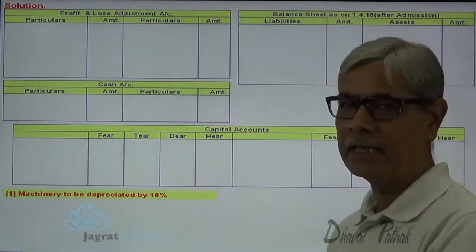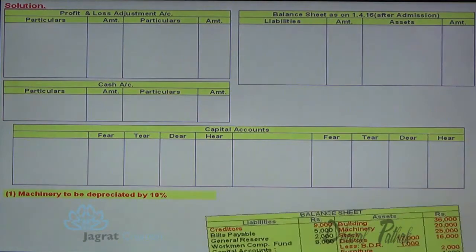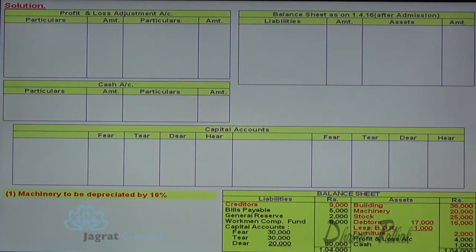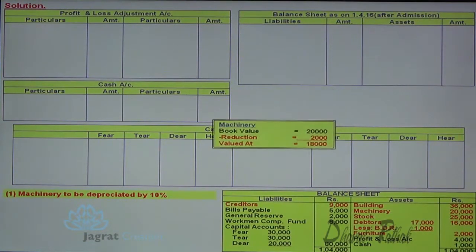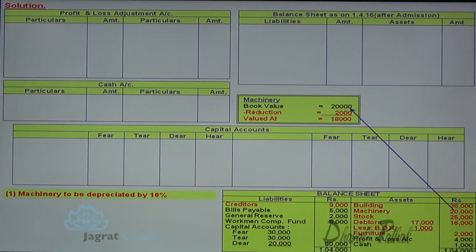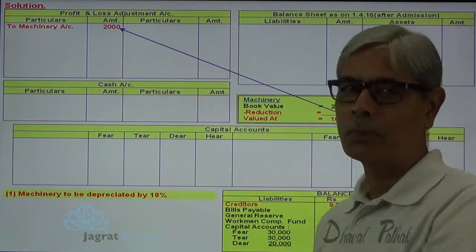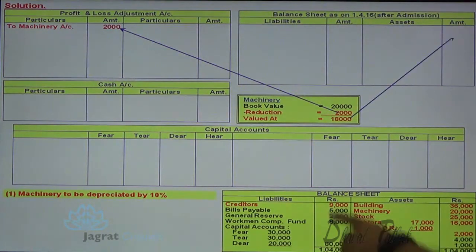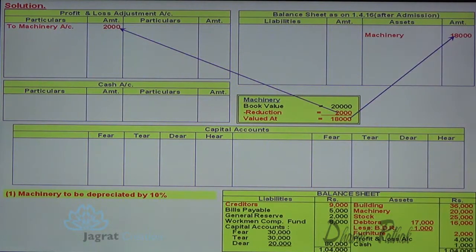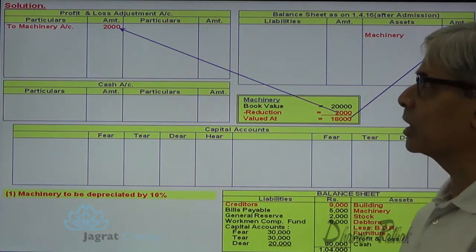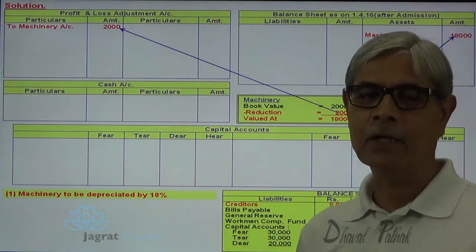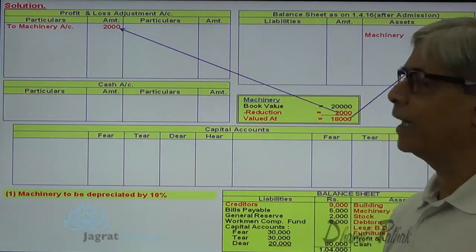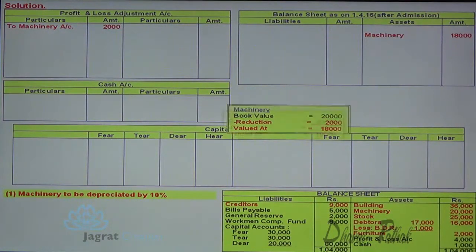Machinery is to be depreciated by 10%. The book value of machinery in the balance sheet is ₹20,000. A 10% reduction gives ₹2,000 being a loss, debited to the profit and loss adjustment account. The new value of ₹18,000 will be recorded in the balance sheet after admission. The journal entry is: profit and loss adjustment account debit to machinery account credit for ₹2,000.